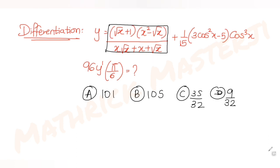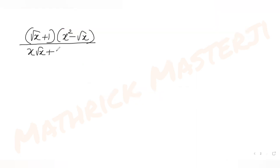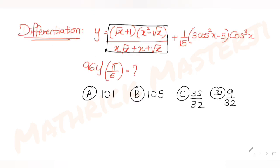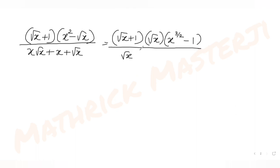Let's simplify the part: √(x+1)(x² - √x) divided by (x·√x + x + √x). I can take out √x as a common factor. From the numerator, taking x^(1/2) common out of x², I'm left with x^(3/2), and minus 1. In the denominator, taking √x common, I get x plus √x plus 1.